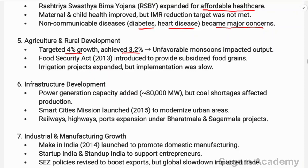In agriculture and rural development, the targeted growth rate was 4% but only 3.2% was achieved. Unfavorable monsoons impacted agricultural output. Irrigation projects were expanded but implementation was slow, hindering the achievement of full targets.